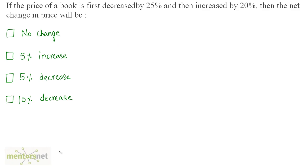If the price of a book is first decreased by 25% and then increased by 20%, what is the net change in price? Let us consider the price of the book as P equals 100 rupees, so that it is easier to deal with percentages. This price is decreased by 25%, so I will decrease 100 by its 25%.